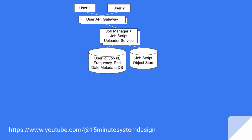Let's say there are users who are connected to a user-side API gateway and want to upload a job script and attach a schedule to it. Primarily, we need a Job Manager plus Job Script Uploader service. This service is responsible for uploading a job script to the job script object store. To maintain the schedule, we keep user ID, job ID, job frequency, and end date if any, in the metadata DB.